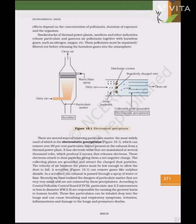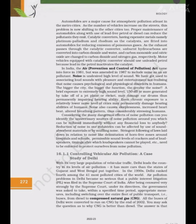A scrubber can remove gases like sulfur dioxide. In a scrubber, the exhaust is passed through a spray of water or lime. Recently, we have realized the dangers of very small particulate matter not removed by precipitators. According to the Central Pollution Control Board (CPCB), particulates of size 2.5 micrometers or less in diameter are responsible for causing the greatest harm to human health. These fine particulates can be inhaled deep into the lungs and can cause breathing and respiratory symptoms, irritation, inflammation, and damage to the lungs and premature deaths.